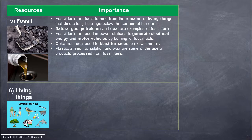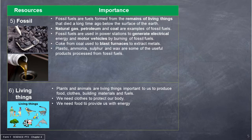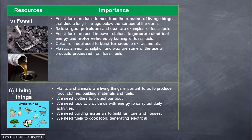The importance of living things: plants and animals are important to us to produce food, clothes, building materials and fuels. We need clothes to protect our body. We need food to provide us with energy to carry out daily activities. We need building materials to build furniture and houses. We need fuels to cook food, generate electrical energy and operate vehicles.